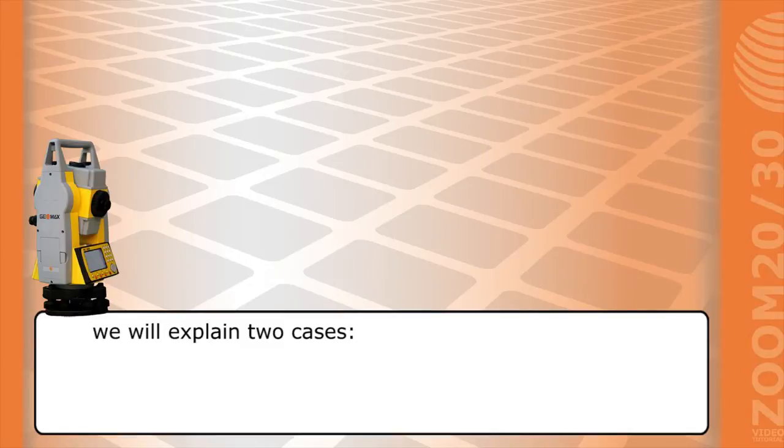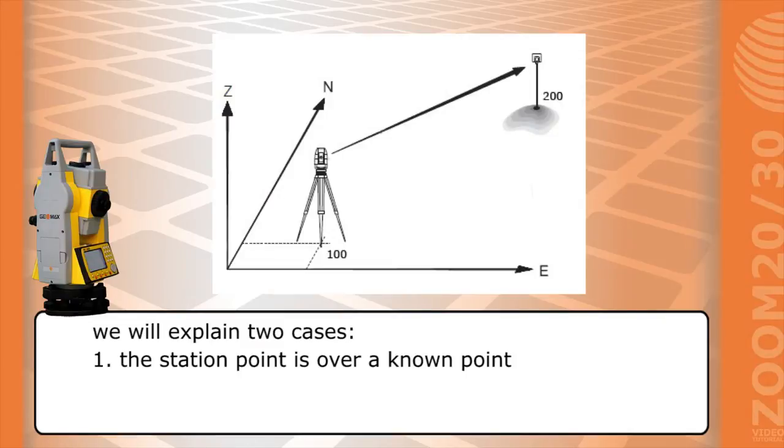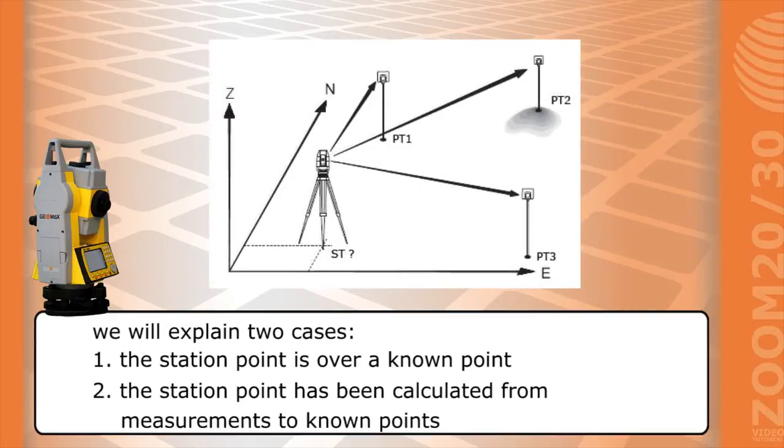We will explain two cases. The station point is over a known point. The station point has been calculated from measurements to known points.